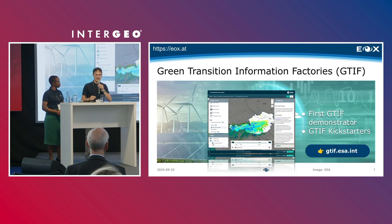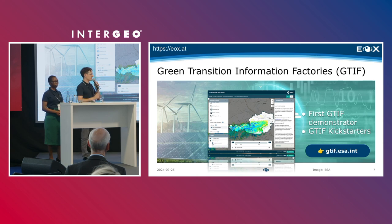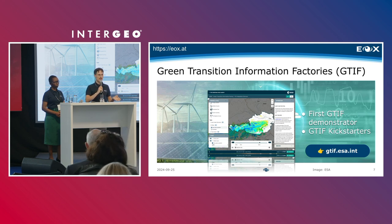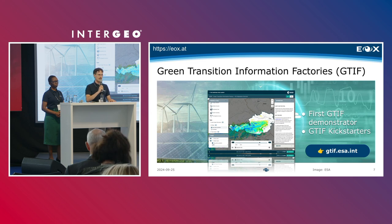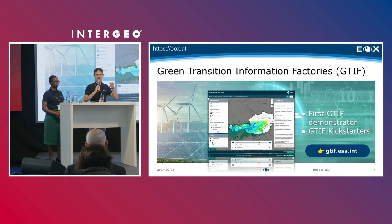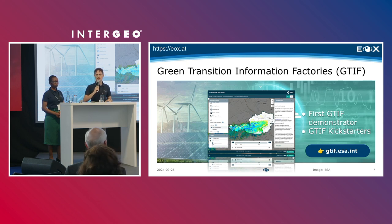Another case study is GTIFF, which stands for Green Transition Information Factory. It's an ESA program, and the centerpiece of GTIFF is our EOX-developed EODASH. The EODASH combines results of satellite algorithms into a convenient dashboard, integrating information and results from several research institutions and other service providers. EOX was part of the first phase of GTIFF with a demonstrator in Austria, and now in the second phase — called GTIFF Kickstarters — the concept is spreading across whole Europe.